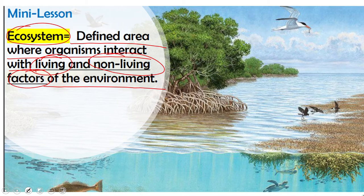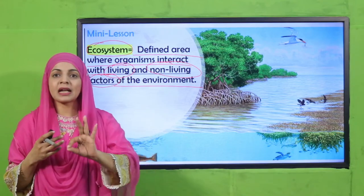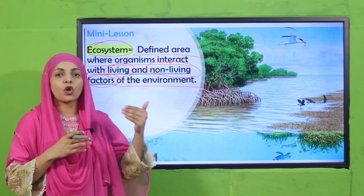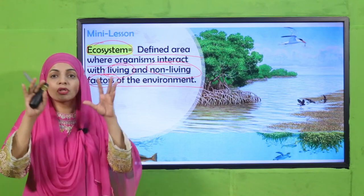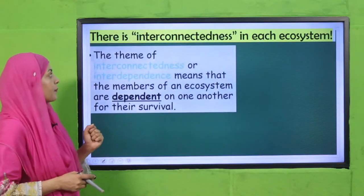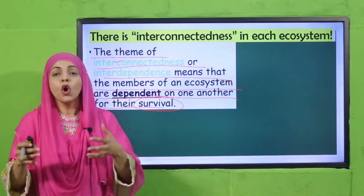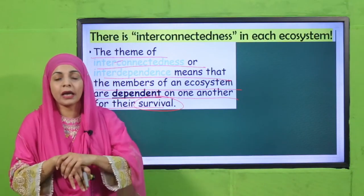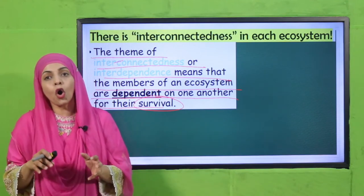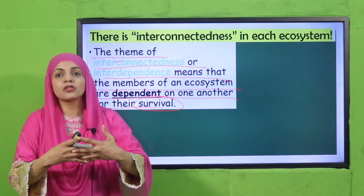An ecosystem is a defined area where organisms interact with the living and non-living factors of the environment. For example, a sparrow living on a tree has that tree as its habitat, but it also interacts with other animals on the tree — it feeds on insects living there. Non-living factors like temperature and air are also important. The theme of interdependence means that members of an ecosystem depend on one another for survival, including both living and non-living factors.